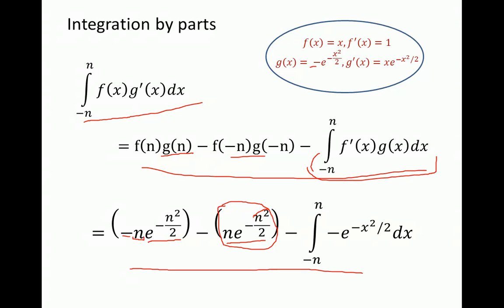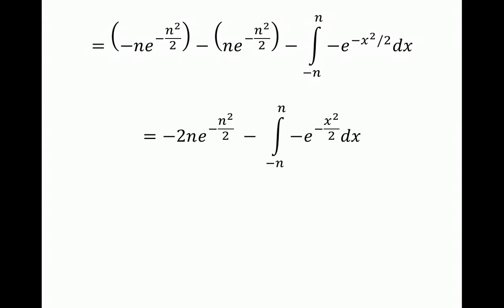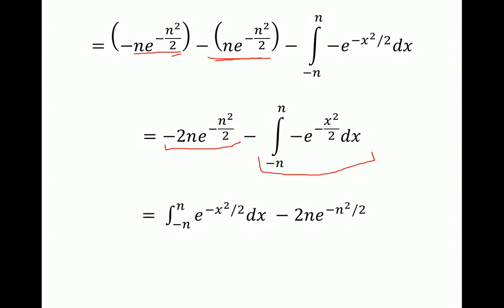For the remaining integral term, we plug in f prime of x, which is 1, times g of x. We can see that the two boundary terms are the same: both give minus n times e to the power of negative n squared over 2. Combining those two terms gives minus 2 times n times e to the power of negative n squared over 2. Because we have two negative signs, the combined boundary term becomes positive, and then we subtract the integral term.